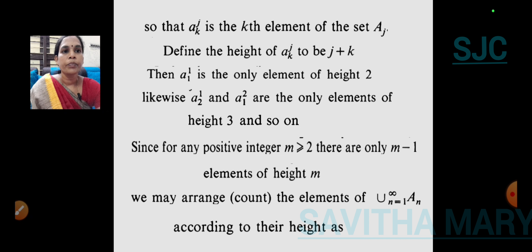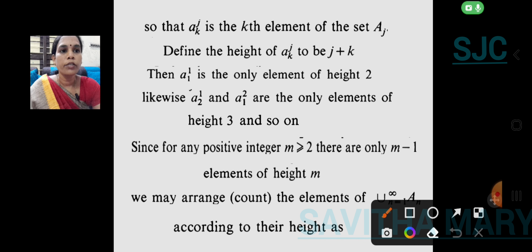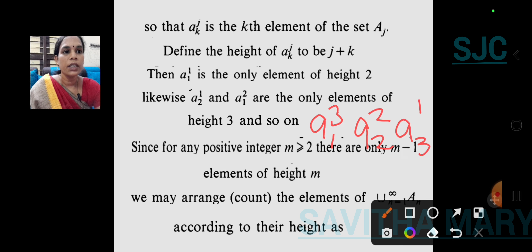Define the height as J plus K. Then A1 superscript 1 is the only element of height 2. There are only two elements of height 3: A2 superscript 1 and A1 superscript 2. For height 4, there are three elements: A1 superscript 3, A2 superscript 2, and A3 superscript 1.